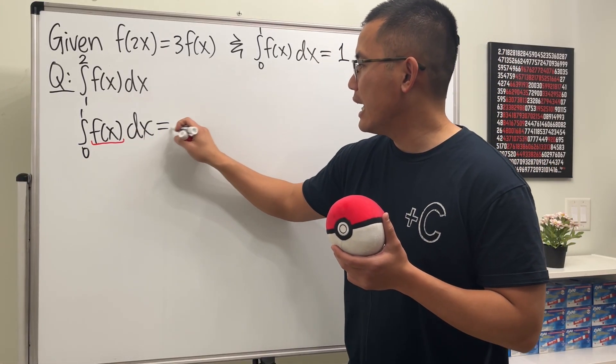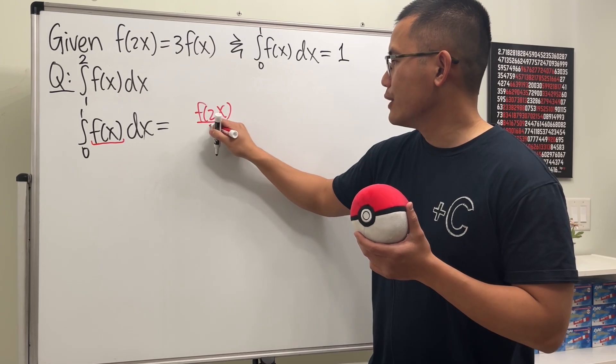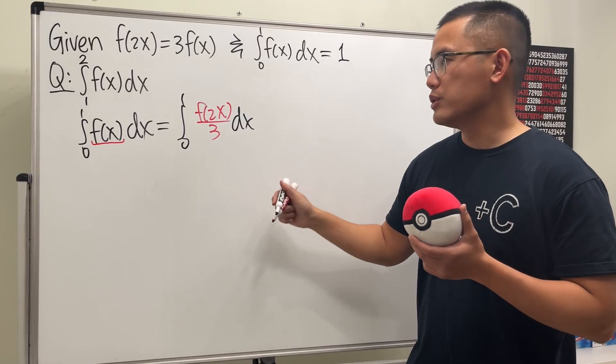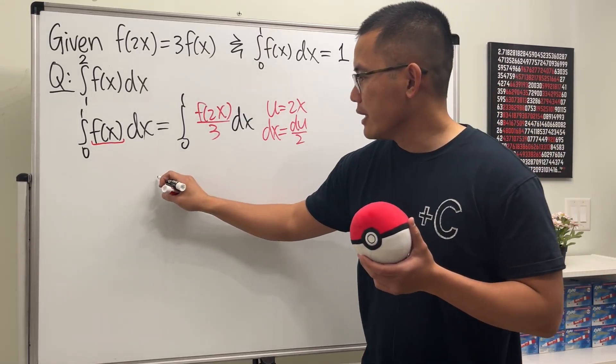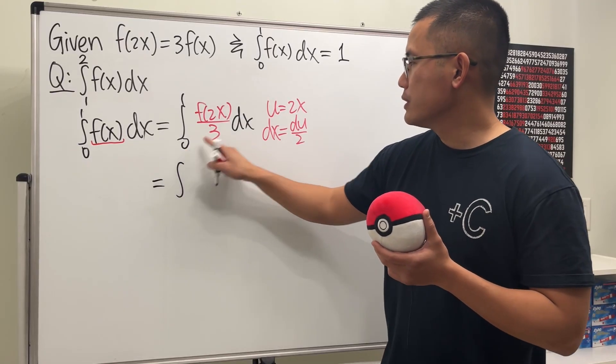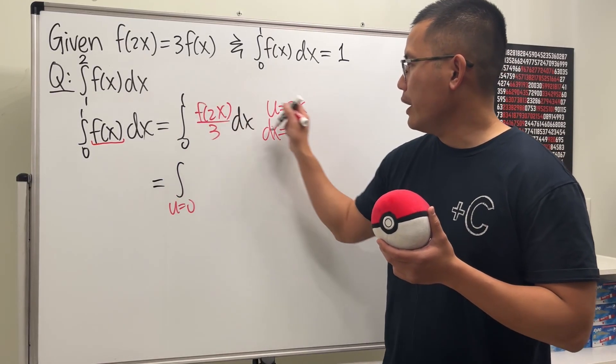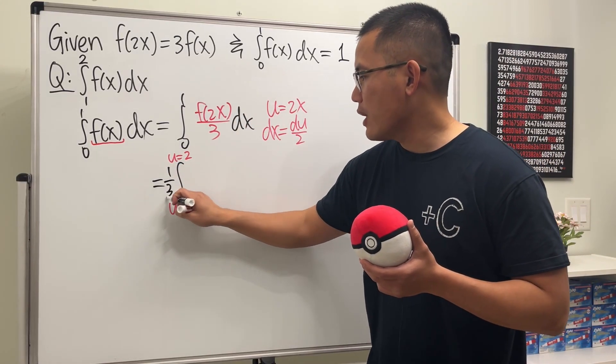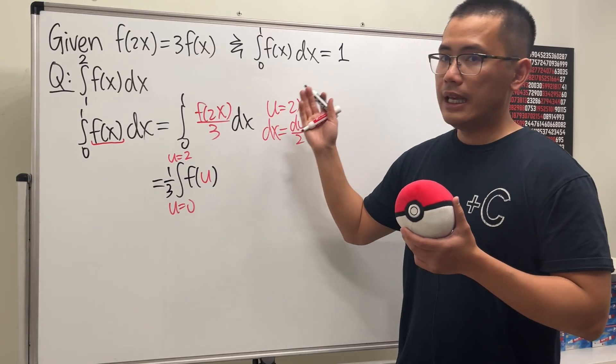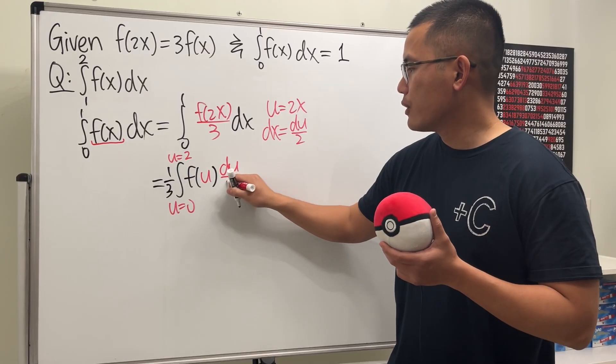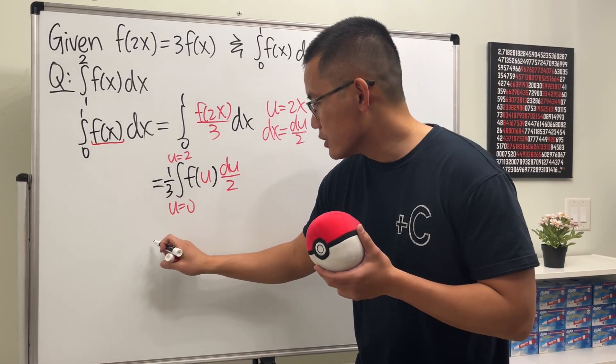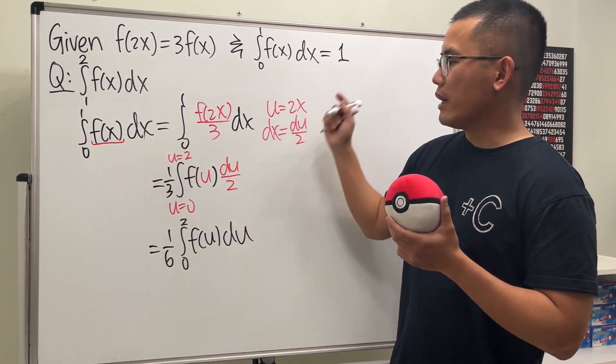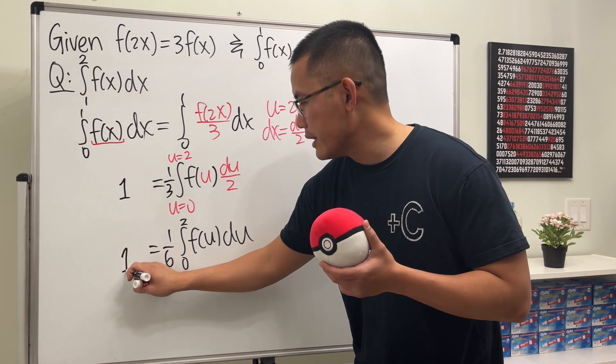That is to write f of x as f of 2x over 3. And we still have to integrate this from 0 to 1 in the x world. And right here, we can just do a u sub. And now take this integral to the u world. Well, put 0 in here, we get u is equal to 0. And put 1 in here, we get u is going to be at 2. And we have the 1 over 3. Let's put in the front. And then we have f of 2x. That is f of u now. And dx is that, which is du over 2. We can put the 1 over 2 in the front. So we have... And now remember, this right here is equal to 1. So we have 1 is equal to that, and 1 is equal to this.